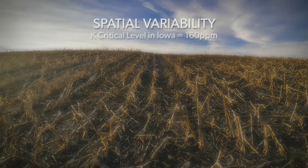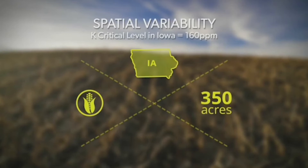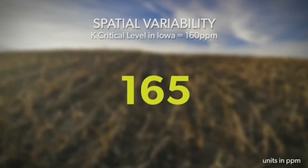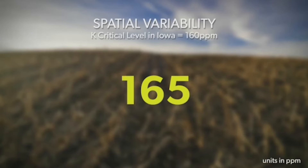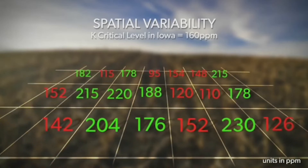It's in those low areas that we're concerned because you could be losing out on yield. To illustrate this point, let's look at an Iowa cornfield of 350 acres with an average soil test potassium level of 165 parts per million. That 165 number returned to you is made up of a lot of different numbers — some are going to be below the critical level, and some are going to be above.